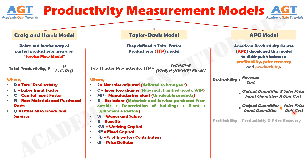So finally, we get that profitability is equal to the product of productivity and price recovery. The APC model compares data from one base period with the data from the current period.